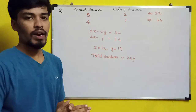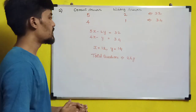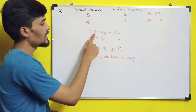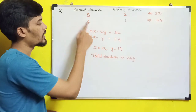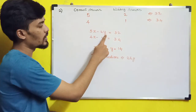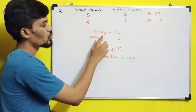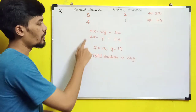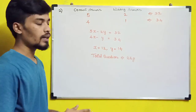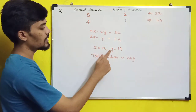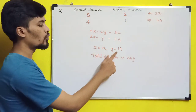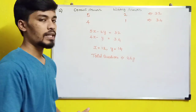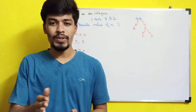We solve this with equations. Let x be the number of correct answers and y be the number of wrong answers. So 5x − 2y = 32 (first equation) and 4x − y = 34 (second equation). Solving these two equations gives x = 12 and y = 14. Total number of questions = 12 + 14 = 26.